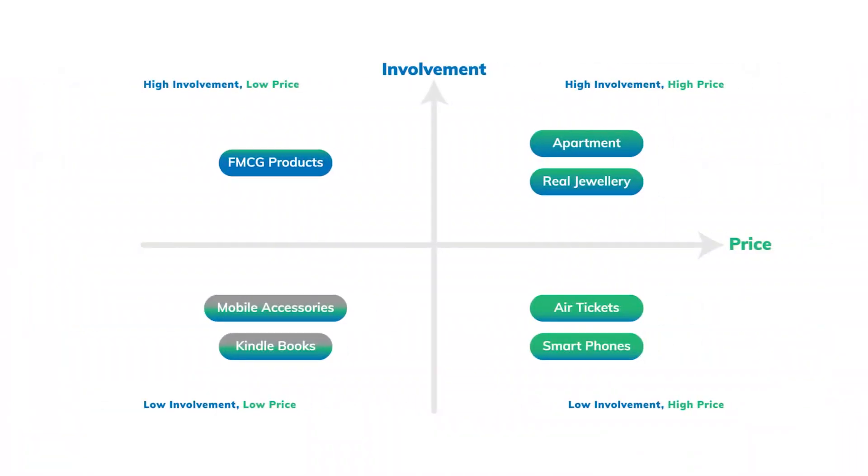Let's look at the second quadrant — low price but high customer involvement. Low price means different things in different countries. For example, in the US, low price could be anything between $0 to $15.